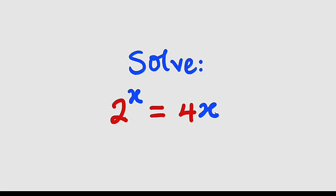Hello, good day viewers. In this tutorial we're going to find a solution to this exponential equation: 2 to the power of x equals 4x. For me this equation is confusing because I tried so hard to solve it algebraically but I couldn't. Therefore I'm going to apply the graphical method, but if you have any suggestion kindly state it in the comment box below. Let's get started.